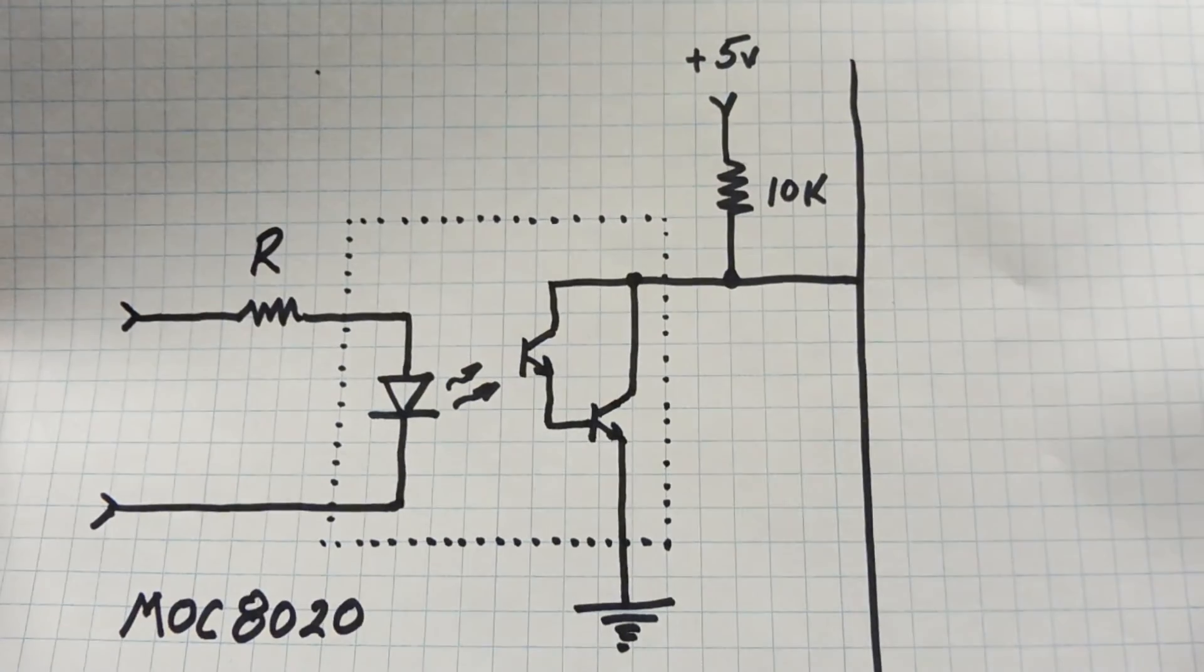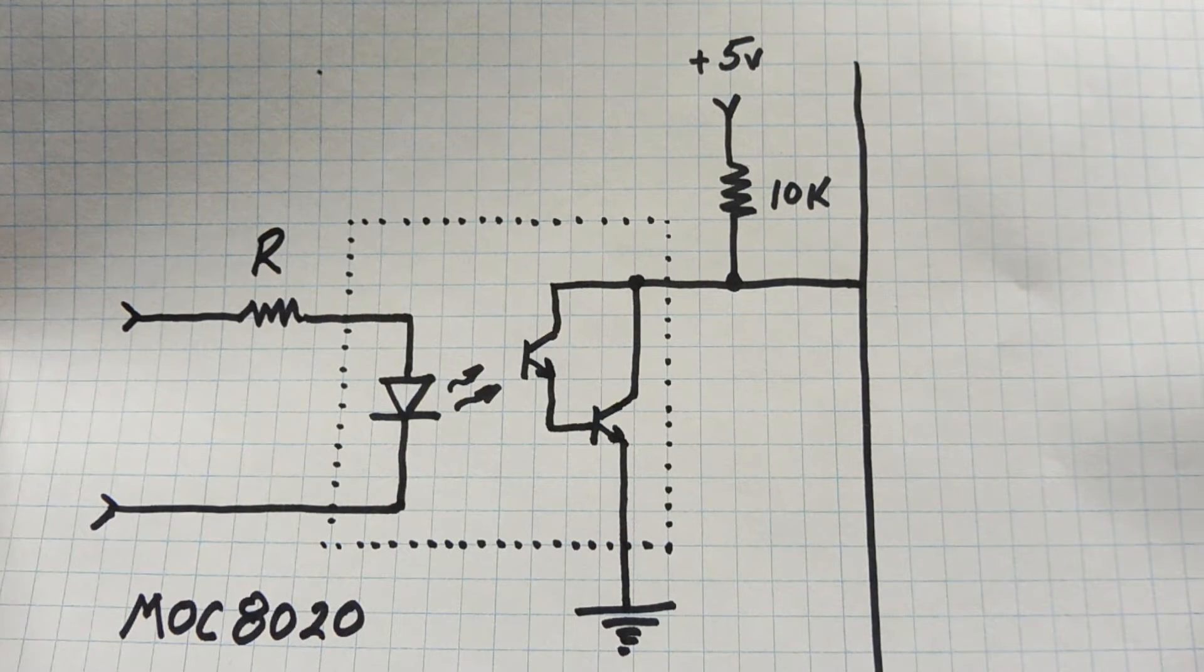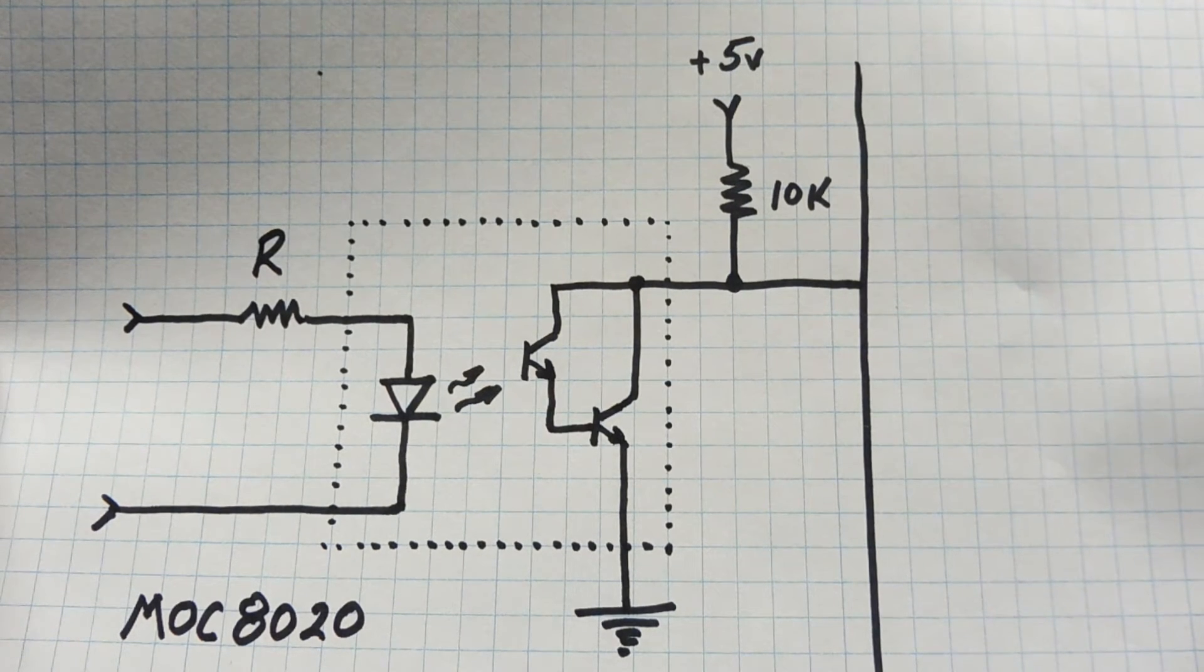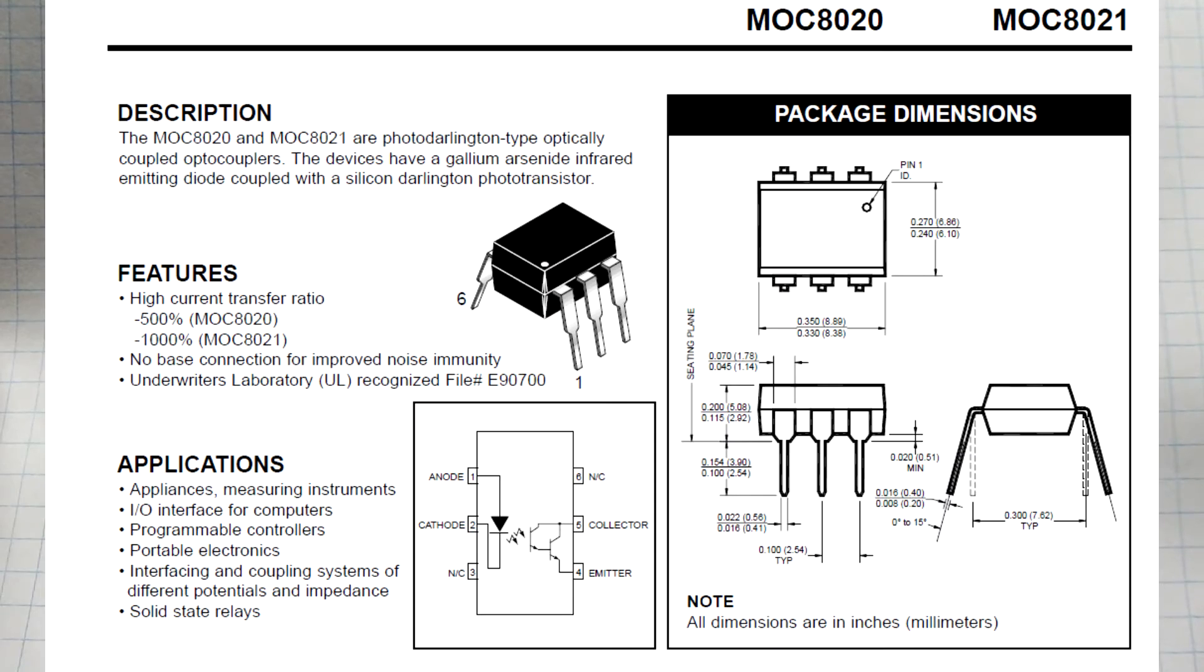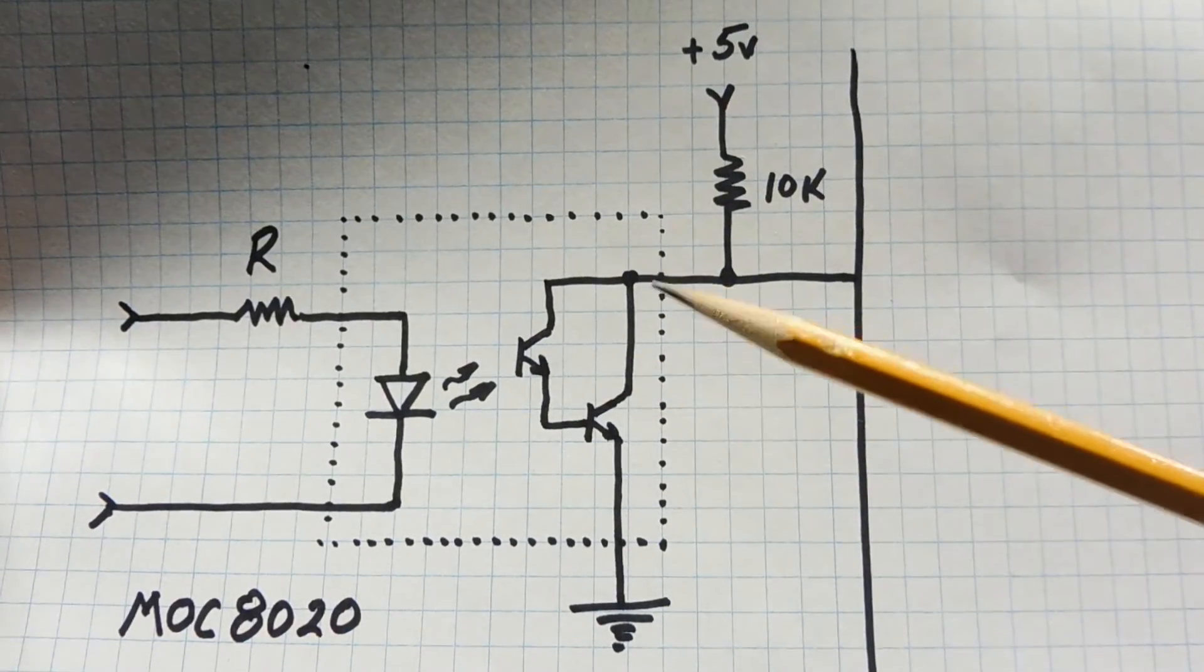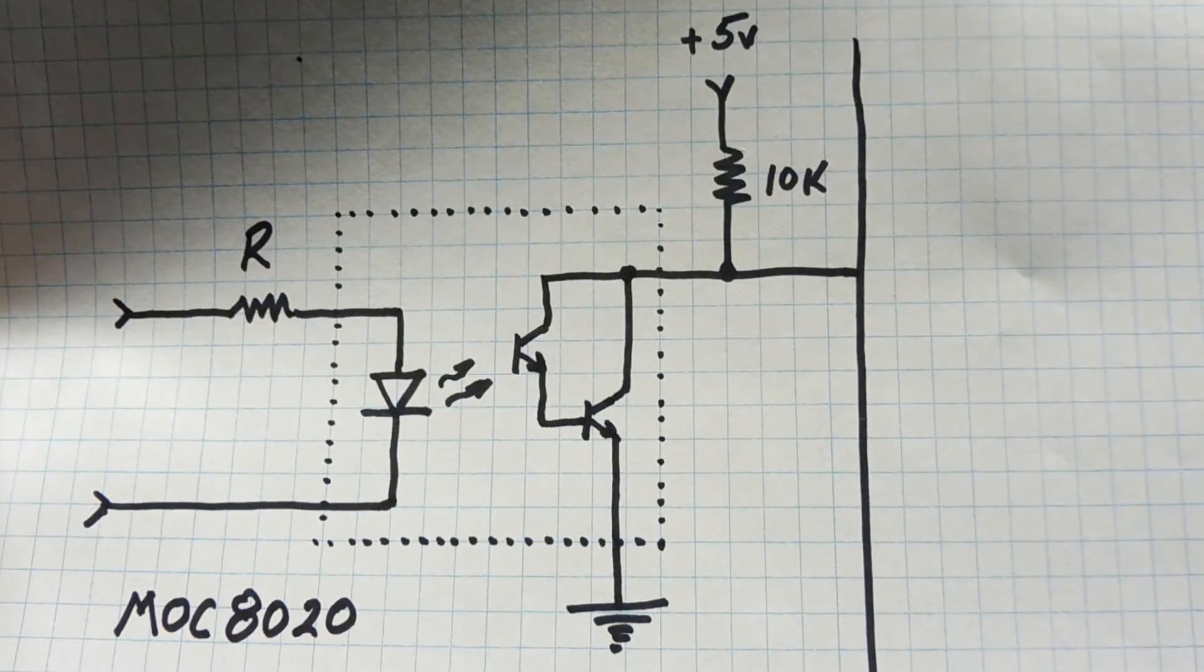When we start getting into the higher voltages, we should be looking into using opto isolators. So we get some isolation between the high voltage and the microcontroller. The one I'm using here is the MOC8020, which has some special properties. This opto isolator has a current transfer ratio of 500%. That's the ratio of the current in the collector to the current through the LED, which means it's a very sensitive opto isolator.